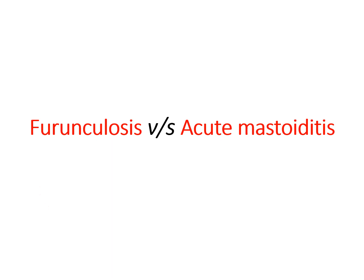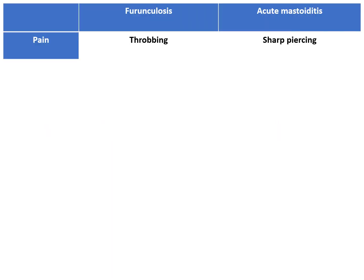Hello everyone. In this video, I will be describing the differences in the clinical features of furuncylosis and acute mastoiditis. Furuncylosis is the staphylococcal infection of the hair follicles in the external auditory canal. The hair follicles are only present in the outer one third of the external auditory canal. So when those follicles get infected with staphylococcus, it is called a furuncle. It is a type of localized otitis externa.